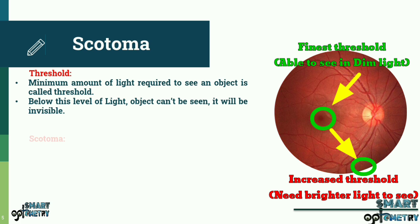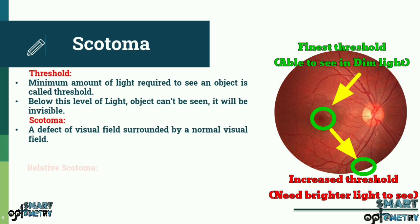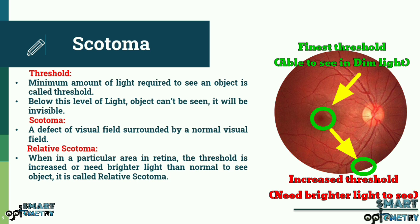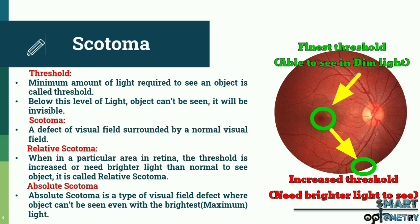A scotoma is a defect of the visual field surrounded by a normal visual field. A relative scotoma is when, in a particular area of the retina, the threshold is increased — meaning brighter light than normal is needed to see an object. An absolute scotoma is a type of visual field defect where an object cannot be seen even with the brightest, i.e. maximum, light.